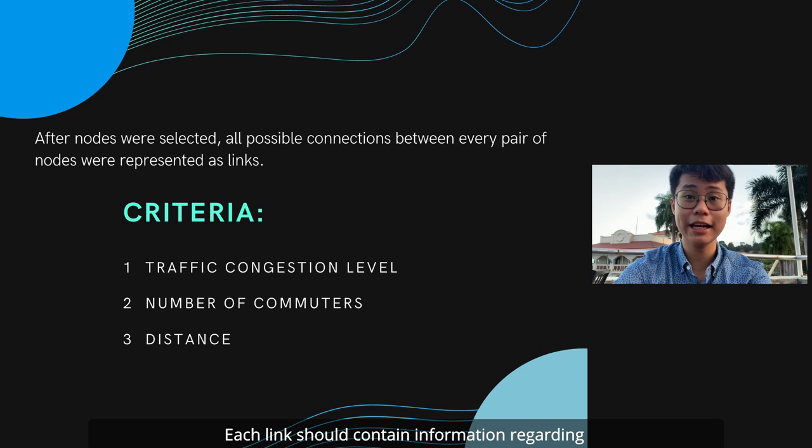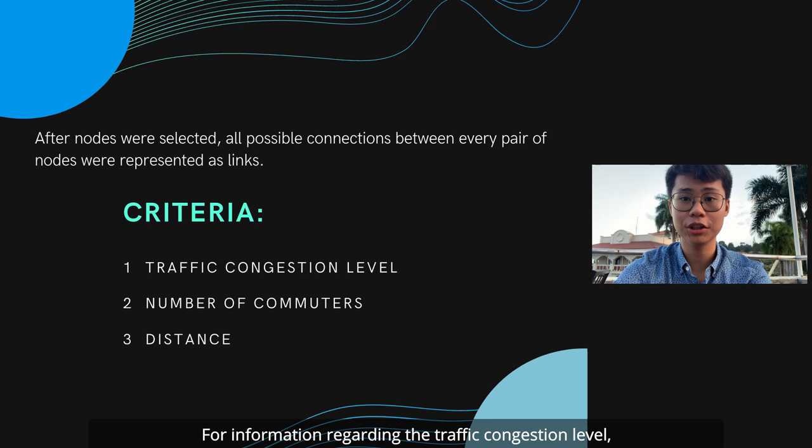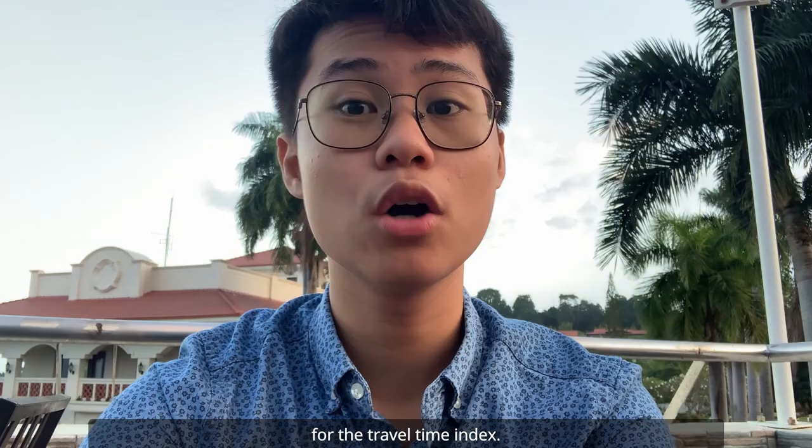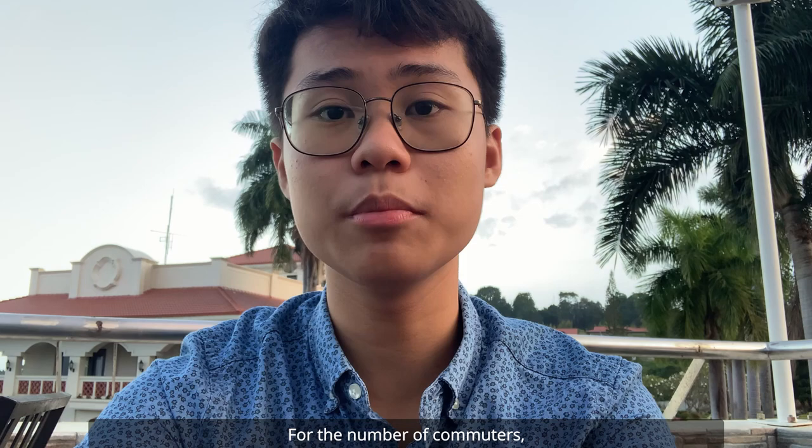For information regarding the traffic congestion level, traffic data during peak and off-peak hours from Google Maps were used to compute a value for the travel time index. Google Maps was also used to take note of the distances between every pair of selected nodes. For the number of commuters, the PSA 2015 population census report was used to approximate the number of commuters in an area.